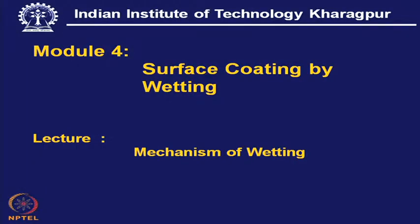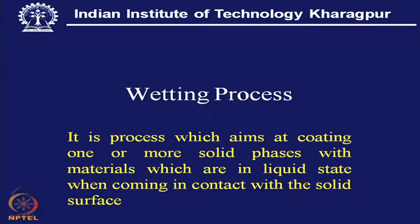Today we shall discuss the mechanism of wetting and the broad area to be covered is surface coating by wetting. Wetting is a process which aims at coating one or more solid phases with materials which are in liquid state and which come in contact with the solid surface. It basically means the spontaneity in spreading of the liquid over the solid surface once it is brought in contact with that solid.